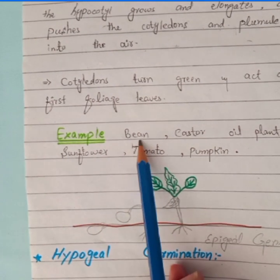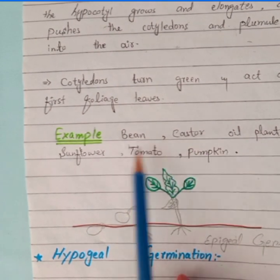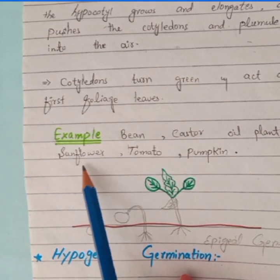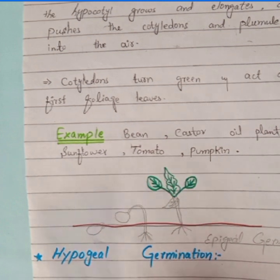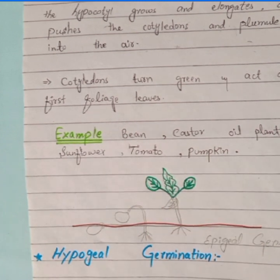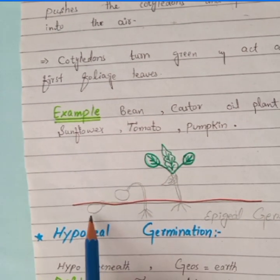Examples of epigeal germination include bean seeds, castor oil plant seeds, sunflower, tomato, and pumpkin. Let's understand this with the help of a diagram. Let's suppose this is a seed that we have sown in the soil.